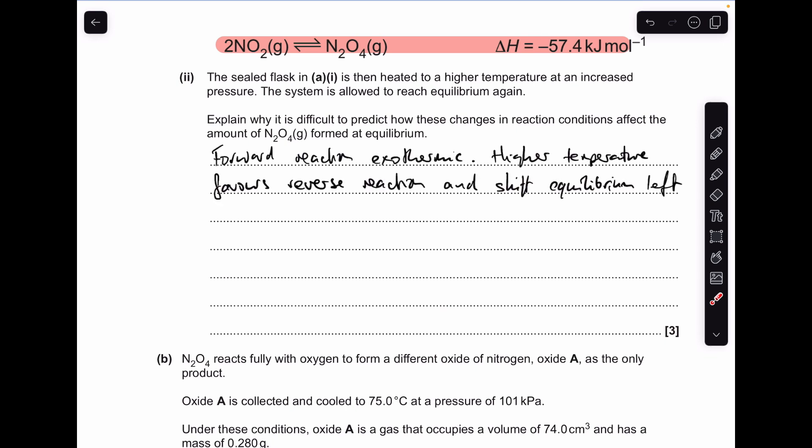And then if we move on to a higher pressure, we've got to look at the numbers of moles of gas on each side of the equilibrium. So we've got two moles of gas on the left. We've only got one mole of gas on the right. So a higher pressure is going to favour the side with the fewest moles. So it's going to send the equilibrium over to the right. It's obviously counteracting this first temperature effect.